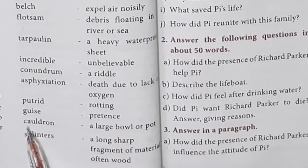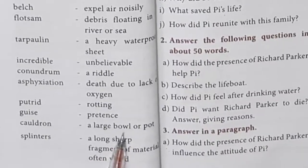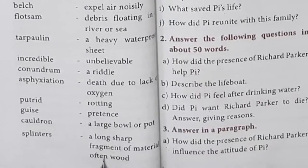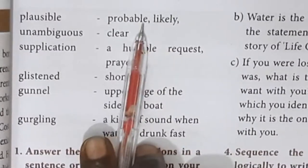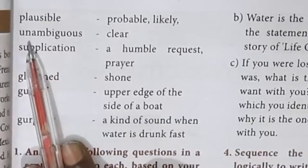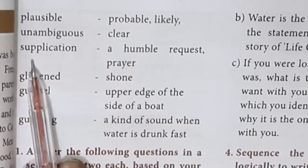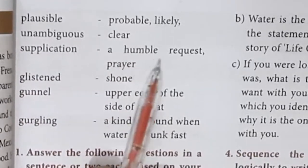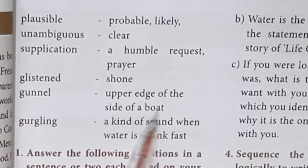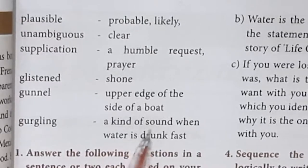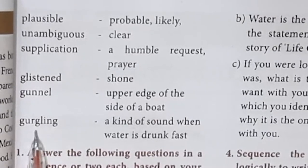Putrid means rotting. Guise means pretending oneself. Cauldron is a large bowl or pot. Splinters means a sharp, long fragment of material, often wood. Plausible means a probable or likely acceptable reason. Unambiguous means clear. Supplication is a humble request or prayer. Glisten means to shine. Gunnel is the upper edge of the side of a boat. Gurgling means the kind of sound when water is drunk fast — like gargling.